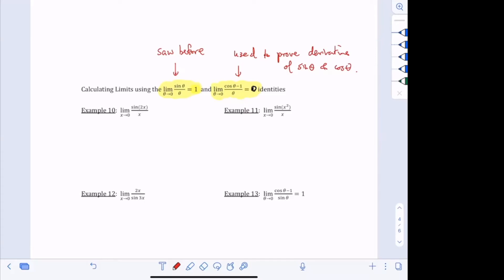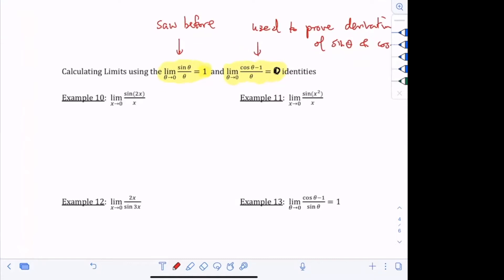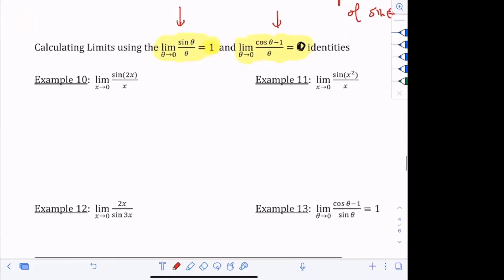Now, I want to leverage these two identities to solve some problems. So if you look at this identity over here, and then you look at example 10, I am not in a position to use this identity yet. I really wish the bottom, the bottom looks just slightly different. Does anyone know what I wish the bottom was so that I could use this identity? Can anyone see what I want the bottom to be?